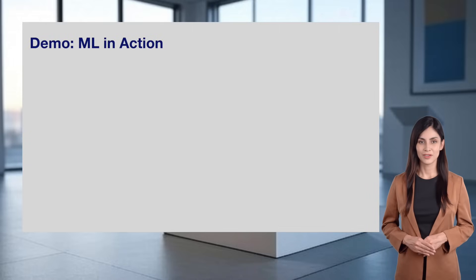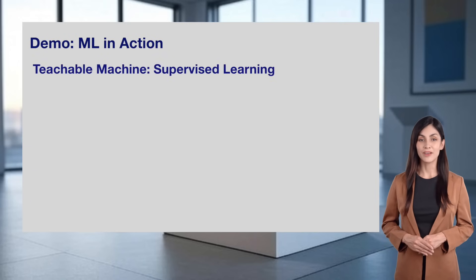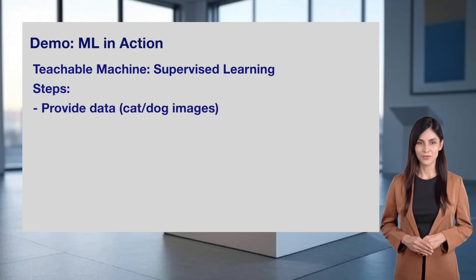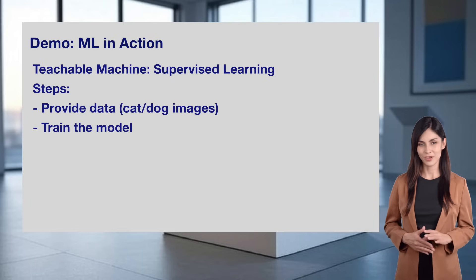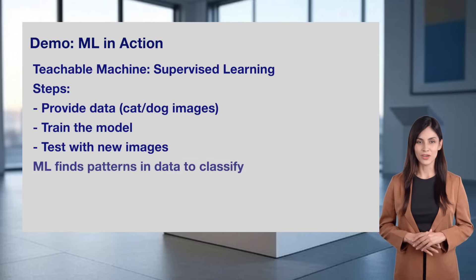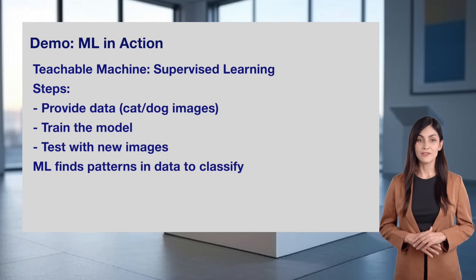Thanks, Sophia. That was a fantastic demo. Let's break down how Teachable Machine works. It uses supervised learning, one of the ML types we mentioned. The steps are simple: first, you provide data, like the cat and dog images Sophia uploaded. Then, you train the model, letting it learn patterns. Finally, you test it with new images, and the model classifies them. Machine learning finds patterns in the data to make decisions, which is why it's so powerful for tasks like classification.